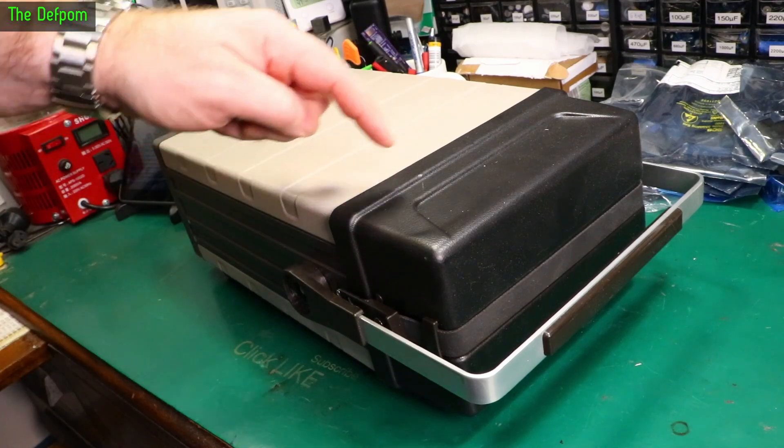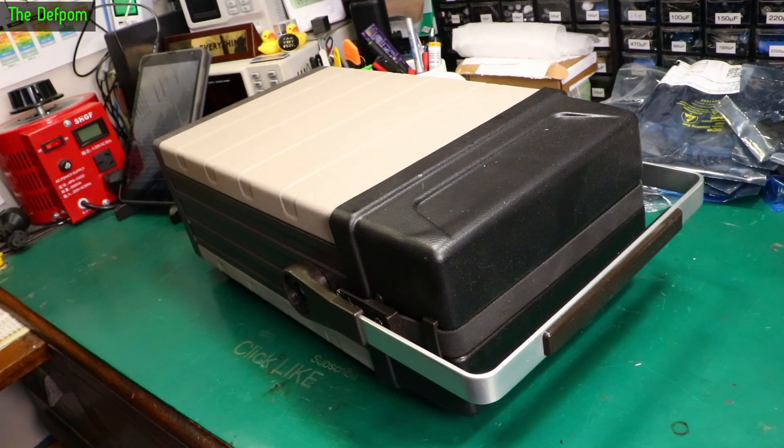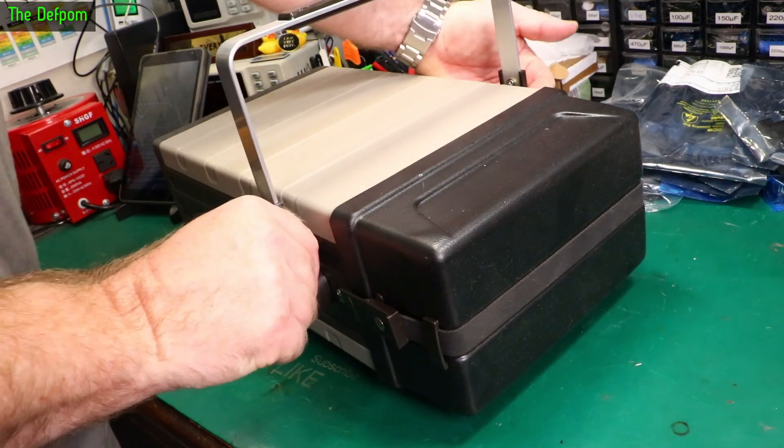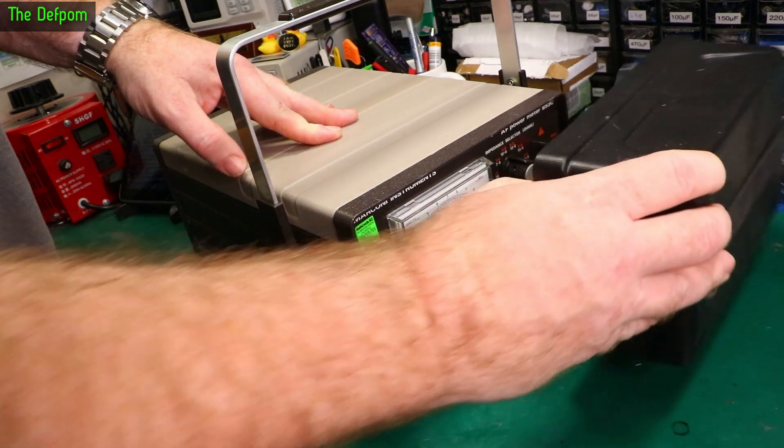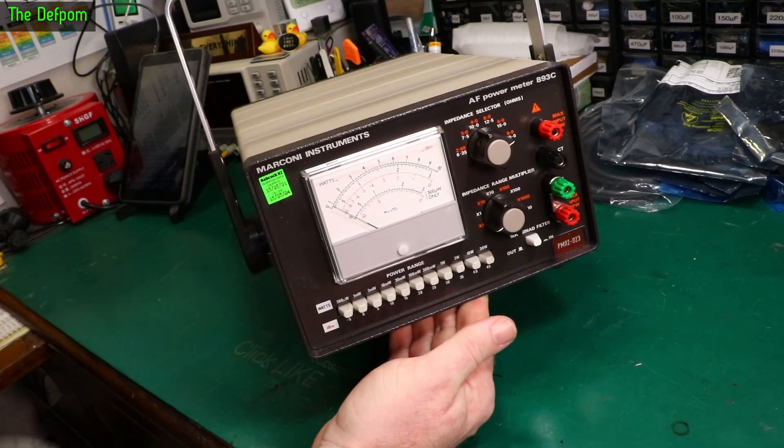So today I'm going to look at this thing. Can you see what it is yet? What's in my car? I thought it would be obvious. Anyway, it has the cover. AF power meter, 893C.